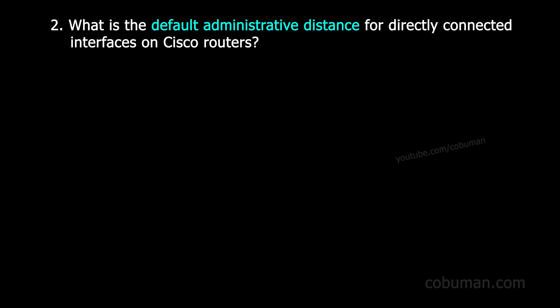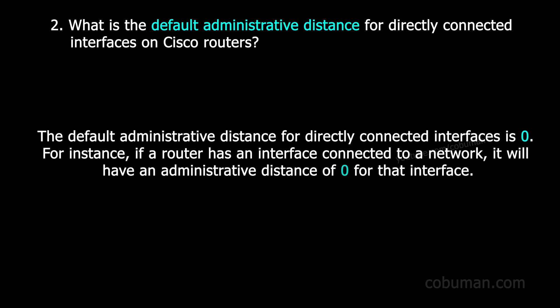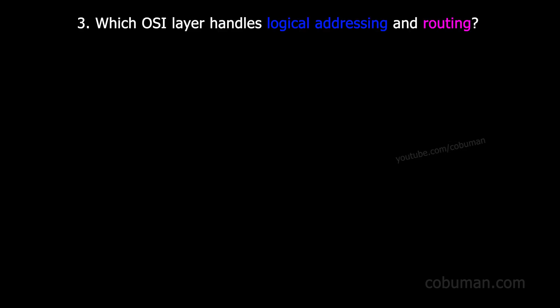Question number two: what is the default administrative distance for directly connected interfaces on Cisco routers? The default administrative distance for directly connected interfaces is zero. For instance, if a router has an interface connected to a network, it will have an administrative distance of zero for that interface.